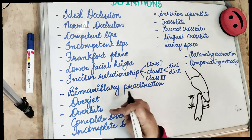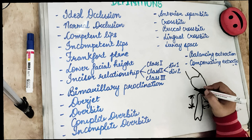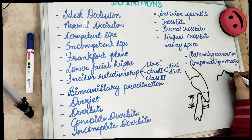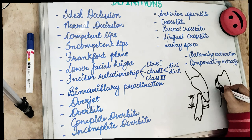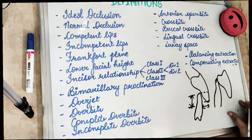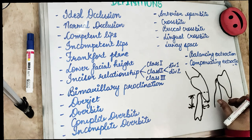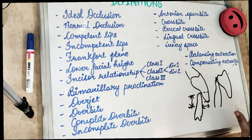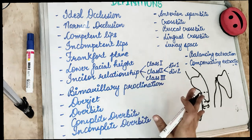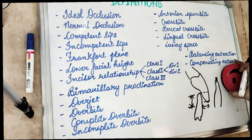Complete overbite is when the lower incisors contact the upper incisor or the palatal mucosa. Incomplete overbite is when the lower incisors do not contact the upper incisors or the palatal mucosa at all.